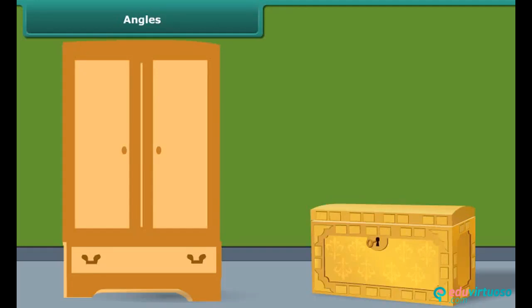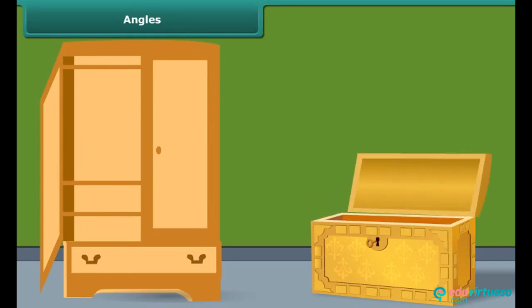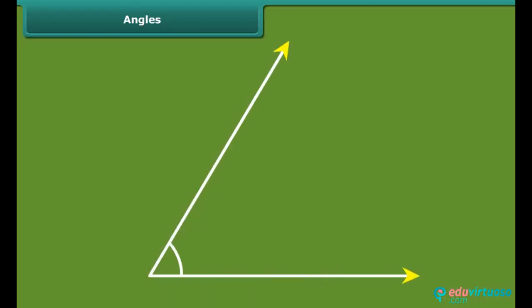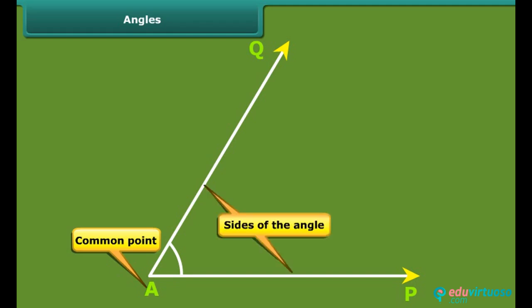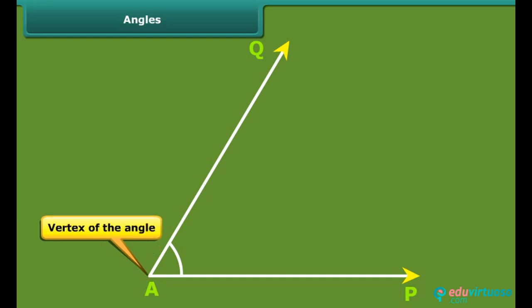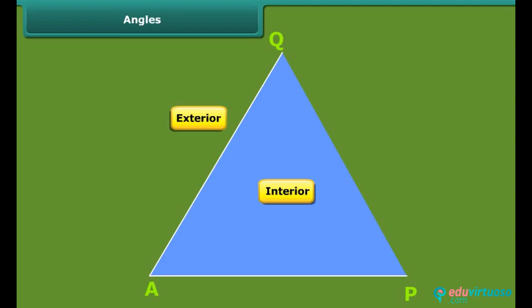Let us now move to another topic. The open door of an almira or a box forms an angle. In the language of mathematics, when two rays start from a common point, we say that an angle is formed. In the given angle, ray AP and AQ have a common point A. The two rays forming an angle are called the arms or sides of the angle. The common end point is the vertex of the angle. The angle is named as angle PAQ. Note that the vertex specifying the angle is written as the middle letter. In the figure shown, the interior and the exterior of the angle is denoted by different colors.